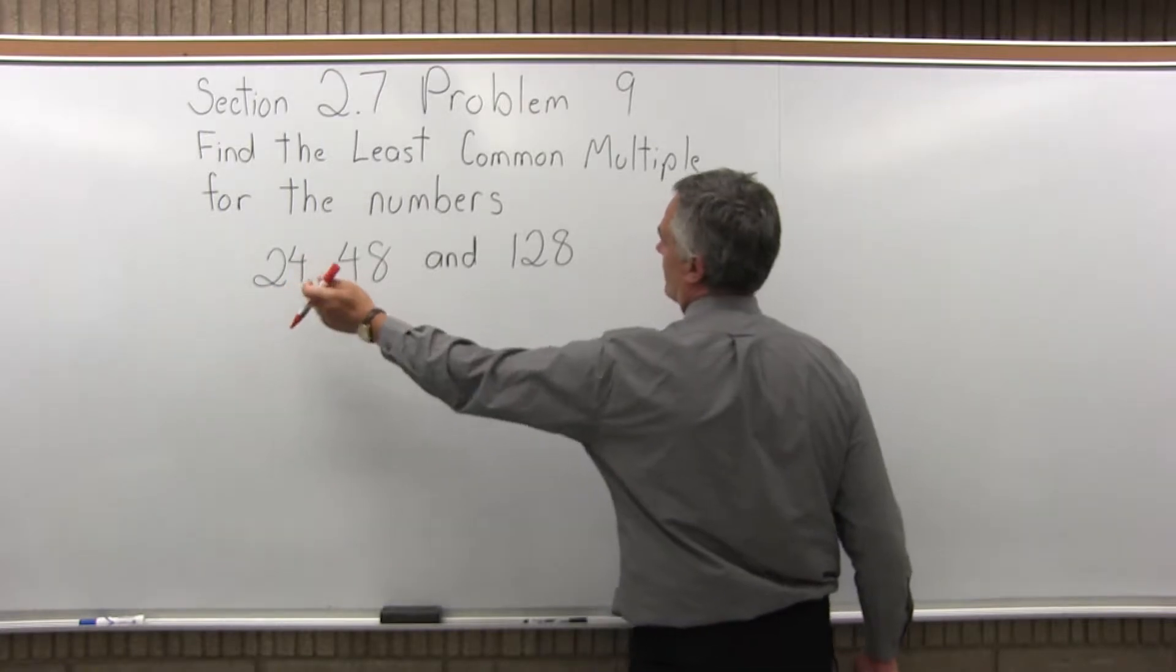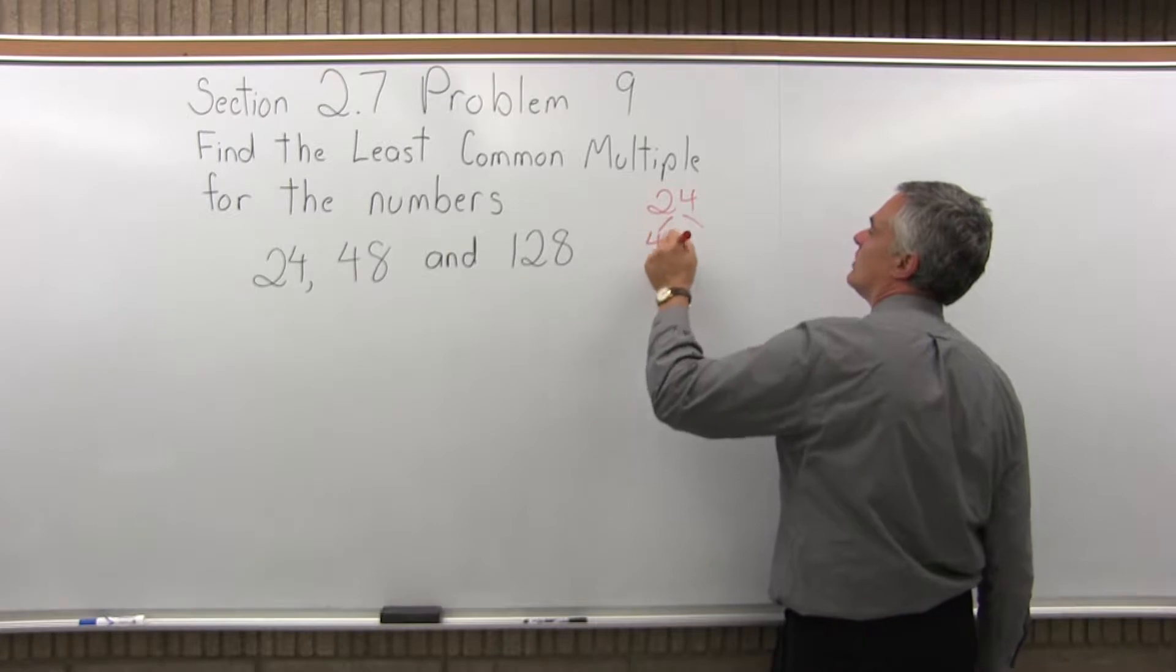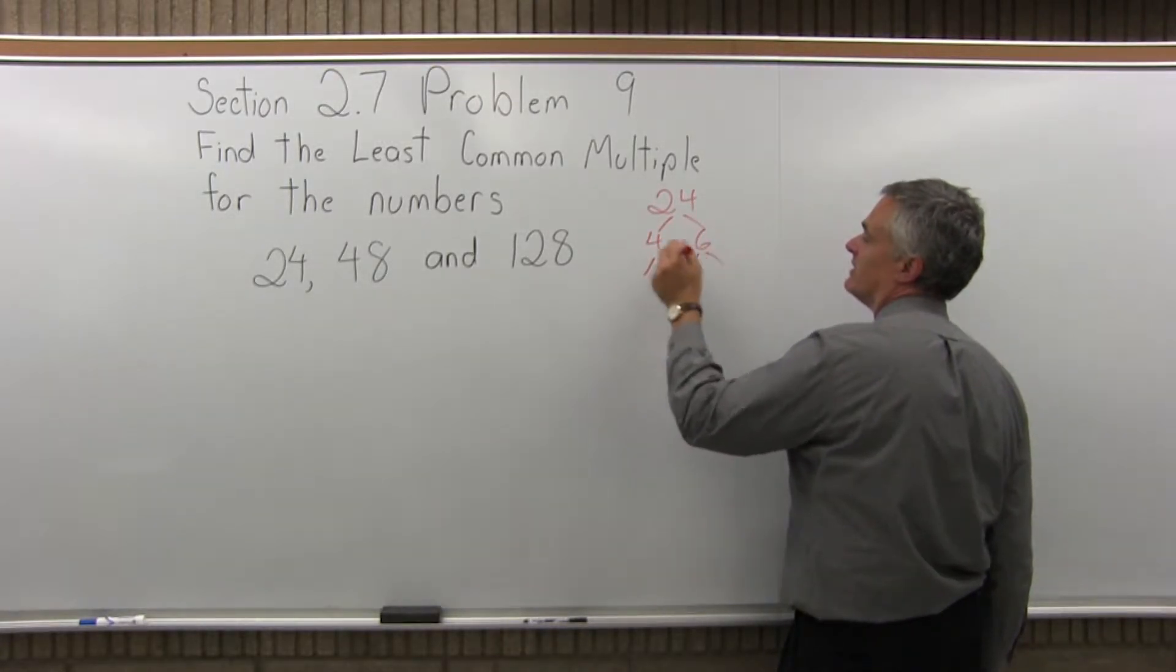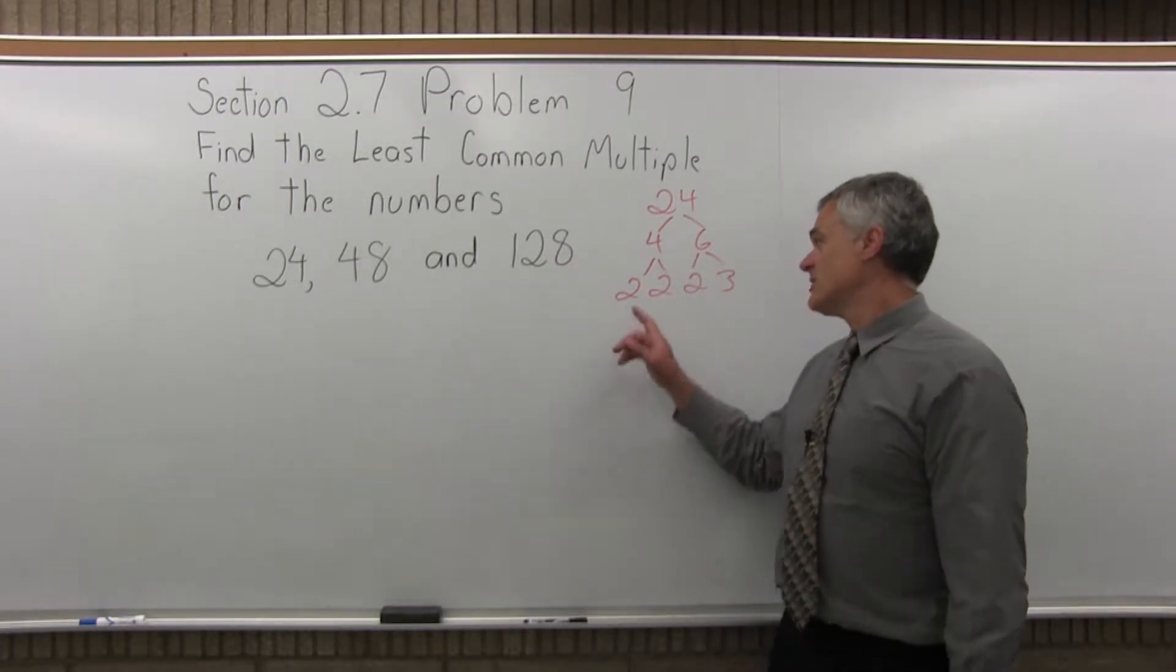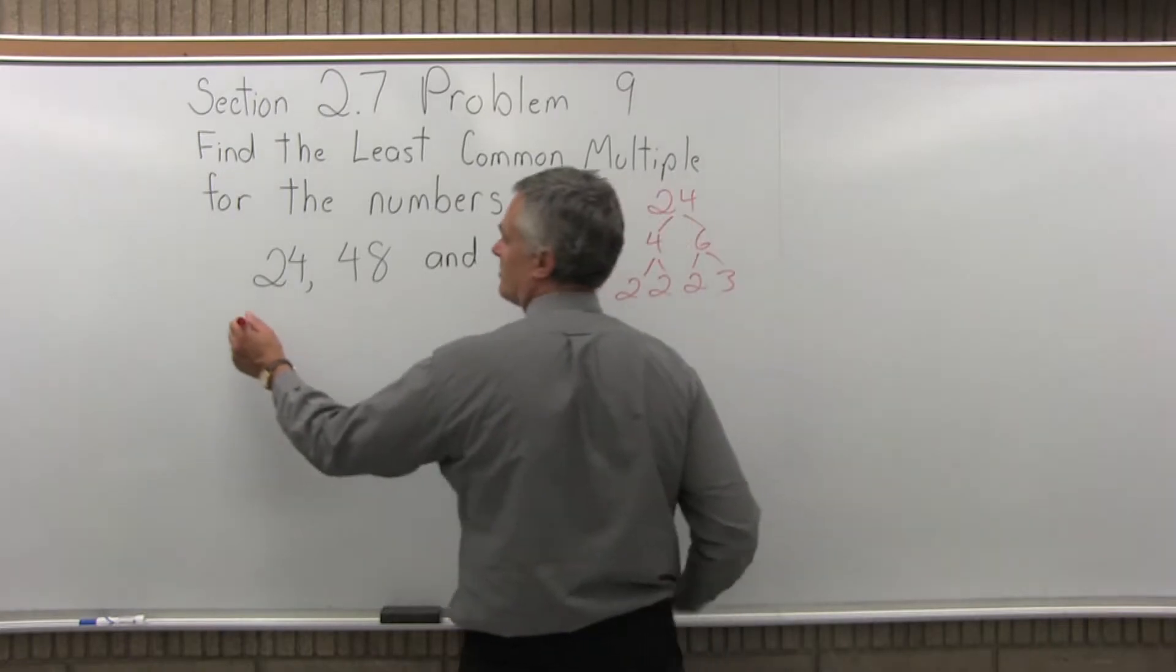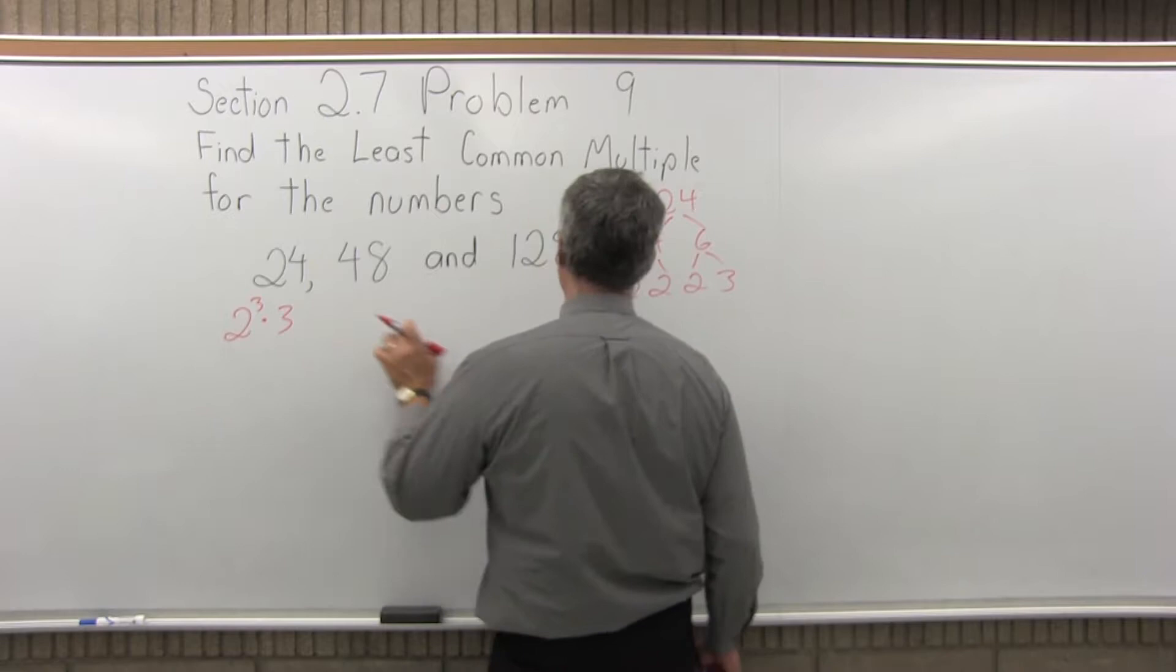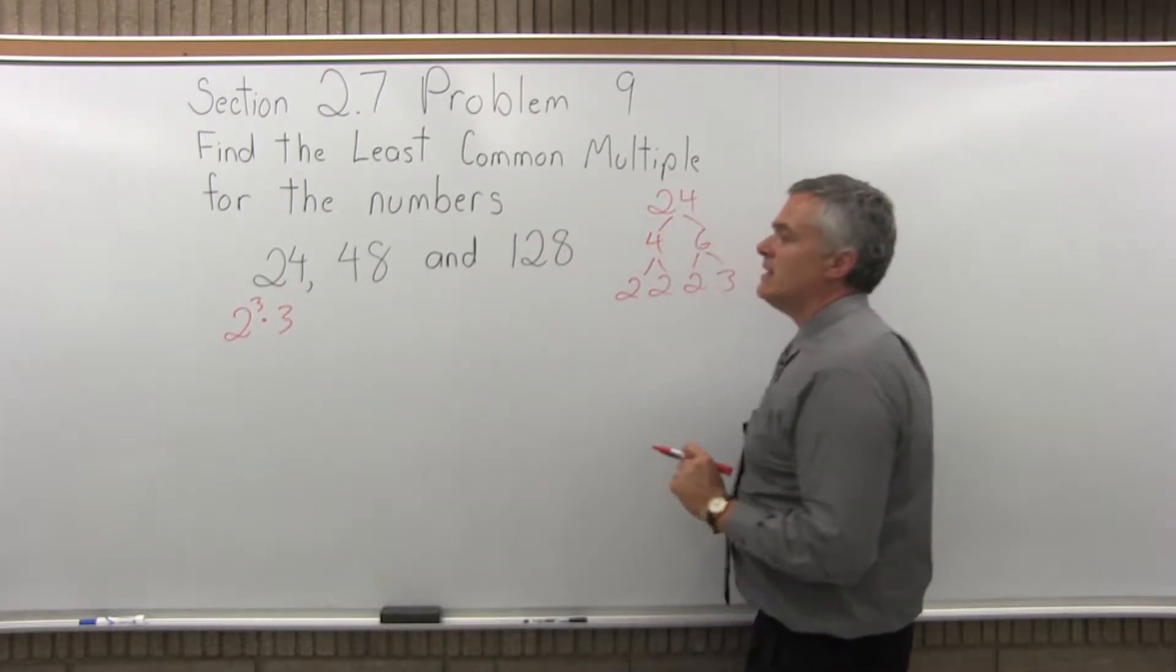Start with 24, do the prime factorization. 24 splits into 4 times 6, among other things—you'll get the same prime factorization in the end. The 4 splits into 2 times 2. The 6 splits into 2 times 3. Now everything is prime. Those are the primes that multiply to make 24. That's the prime factorization: 2 to the third times 3. Where I have a repeated prime, like the 2, I use an exponent.